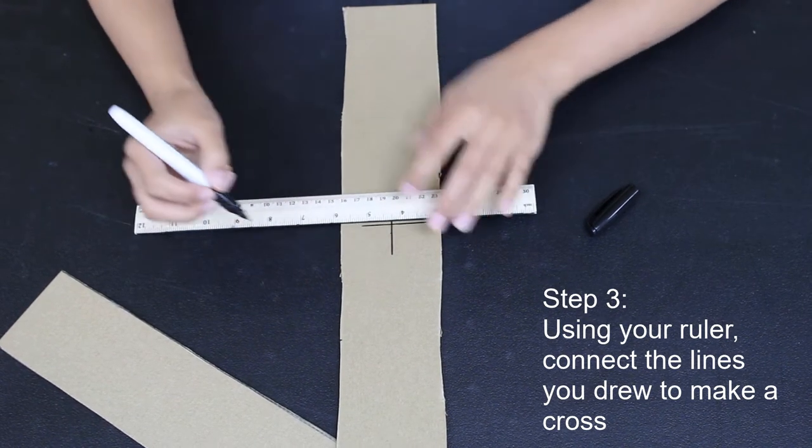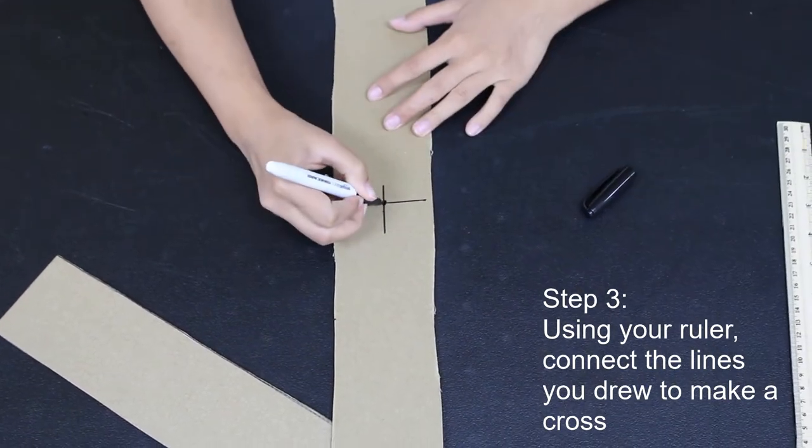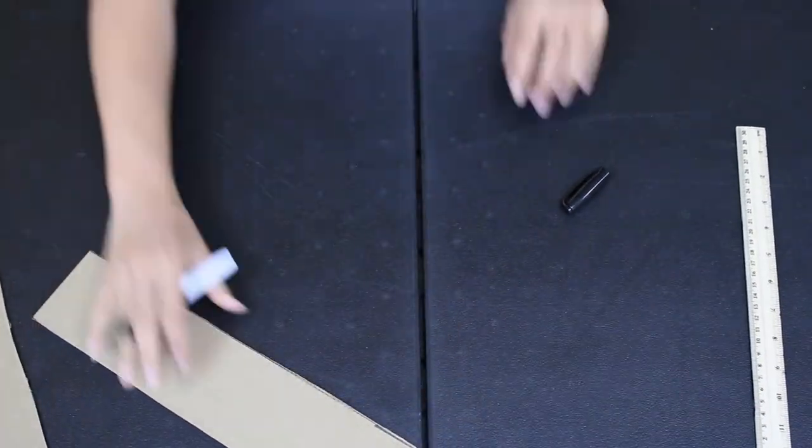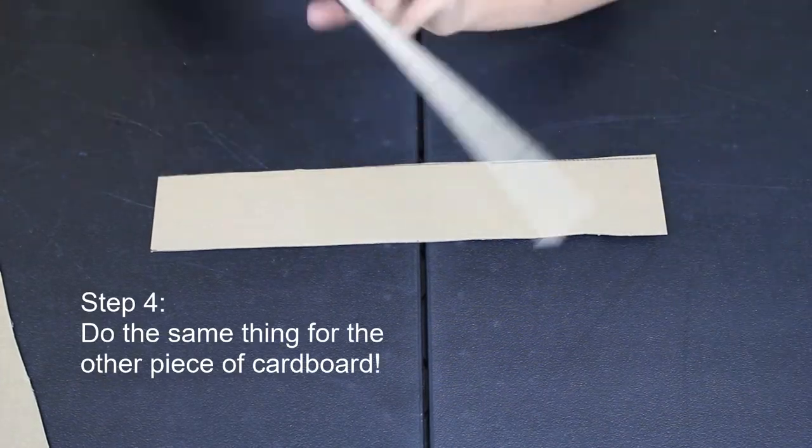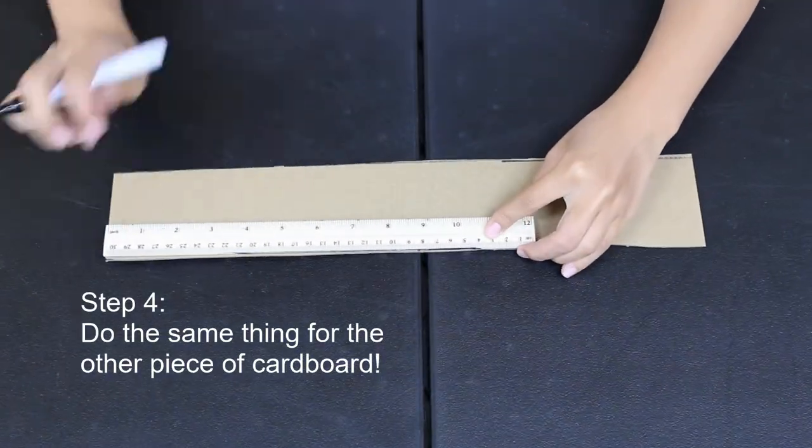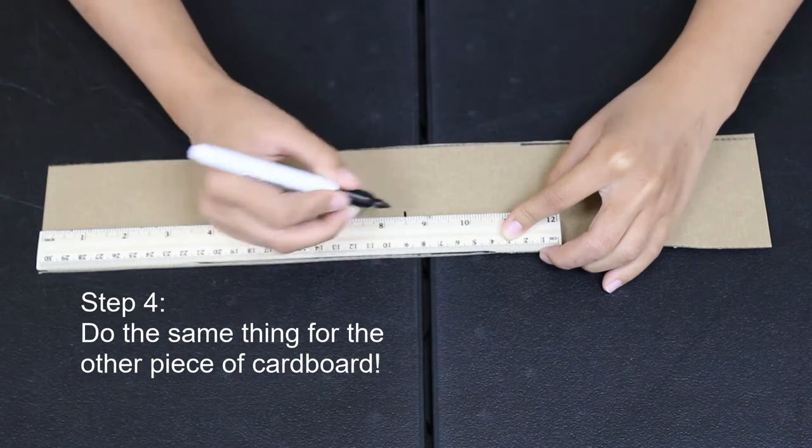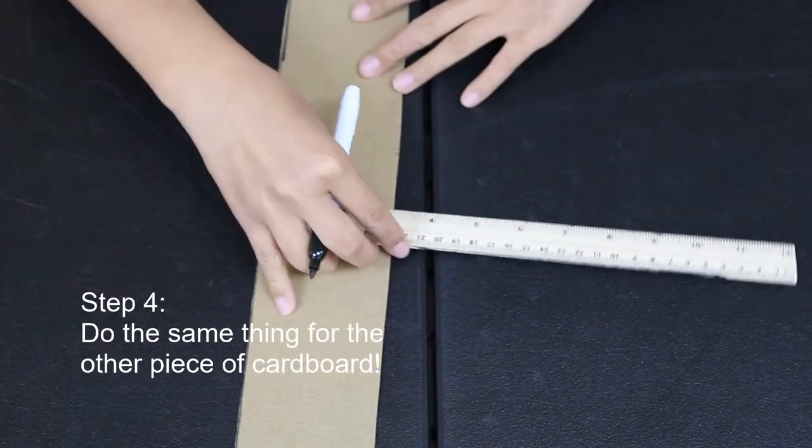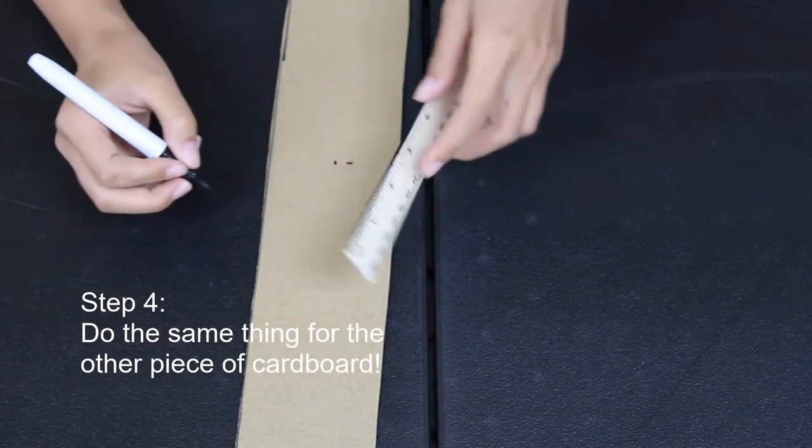You can also just make intersecting lines if that's what you prefer. Go ahead and do that on your second piece of cardboard: 8.5 inches lengthwise and 1.5 inches widthwise.